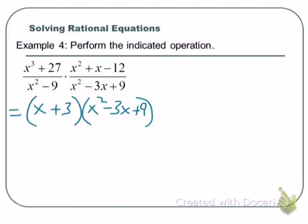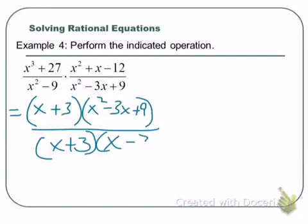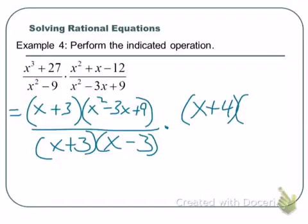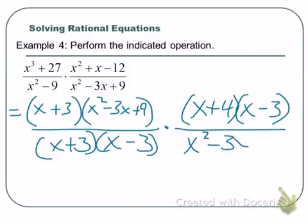What about x squared minus 9? That factors as x plus 3 times x minus 3. And the second expression: the factorization of x squared plus x minus 12 is x plus 4 times x minus 3. And we just said that x squared minus 3x plus 9 is prime.